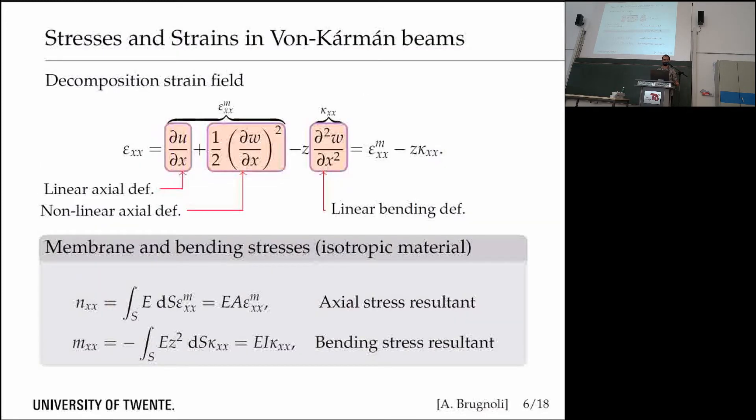The reason is that we have an axial strain decomposed into a membrane part, an axial part. The first two terms in this equation are related to epsilon membrane. And a second part which is related to the bending, the curvature of the beam.